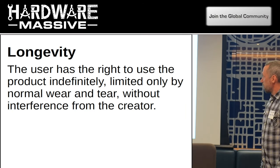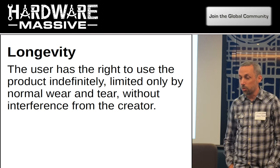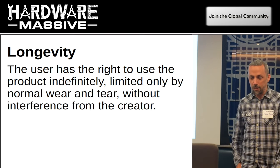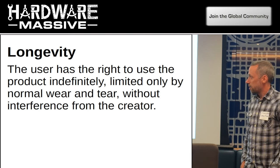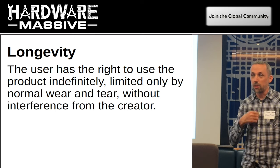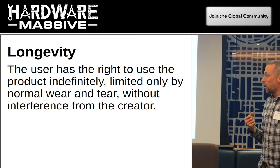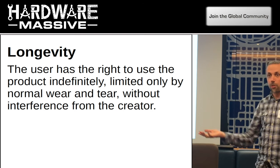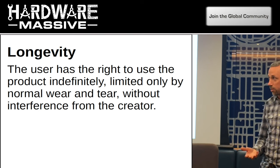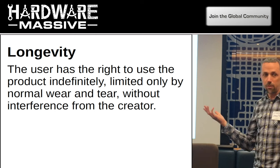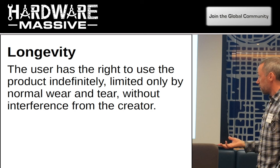Longevity is something that hit the news recently. When Google's parent company bought a company called Revolv and decided to shut down their product line — an Internet of Things home automation hub — they didn't just turn the service off. They actually bricked all the devices people had bought. It's okay to shut down your service, but to make useless a product that I own, without my permission, is a totally different proposition.